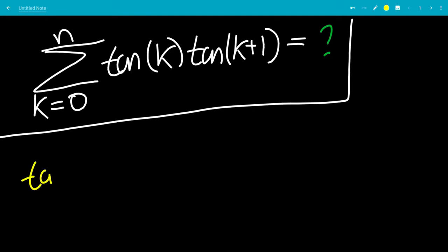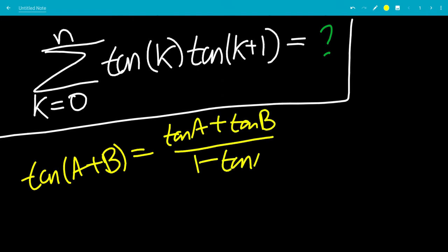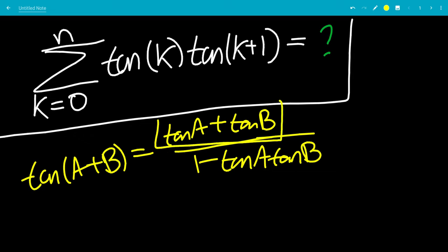We know that tangent of a plus b is tangent a plus tangent b, all over 1 minus tangent a tangent b. This almost looks right, but we want this to be telescoping, so we want the top to be tangent a minus tangent b.